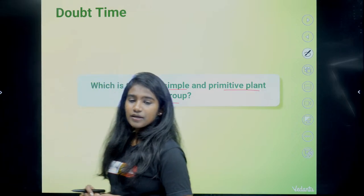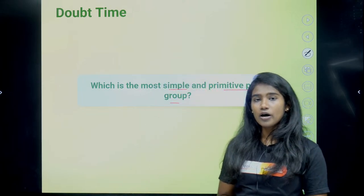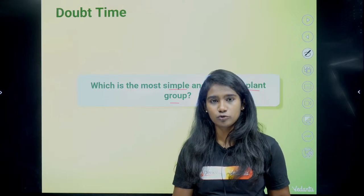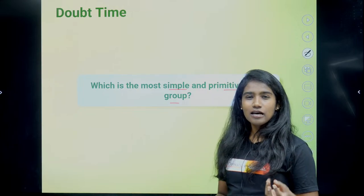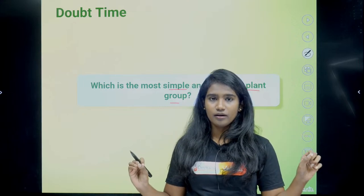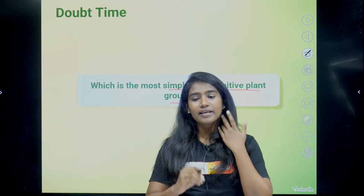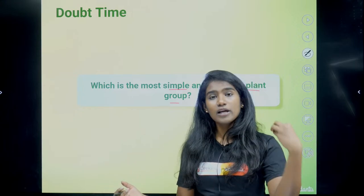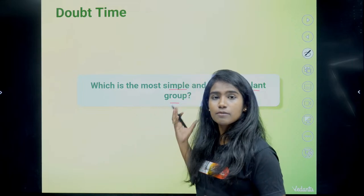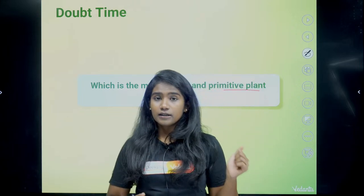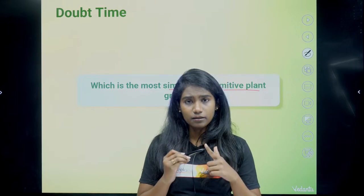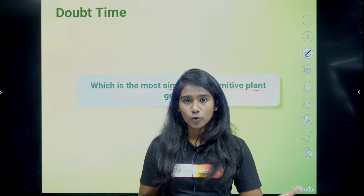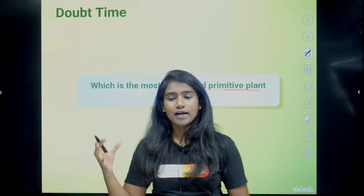Thallophyta is the most primitive division; the example is algae. Even though the algae plant body is not differentiated into root, stem, or leaf and lacks vascular tissues, it still falls under kingdom Plantae because its cells are eukaryotic, multicellular, have cell walls, and have chlorophyll pigment which enables photosynthesis — autotrophic nutrition.